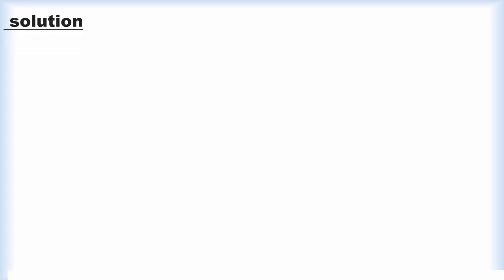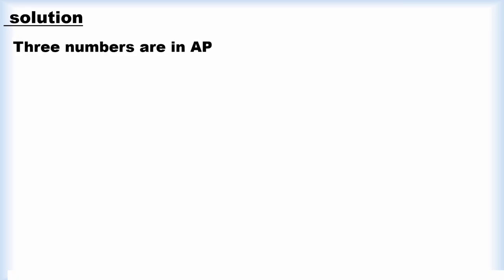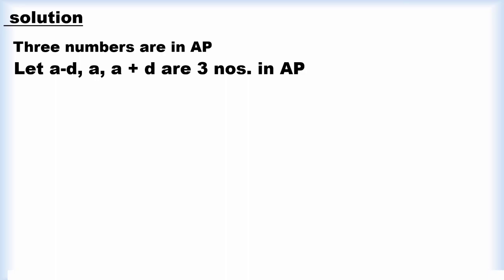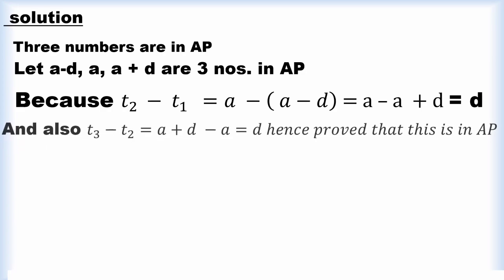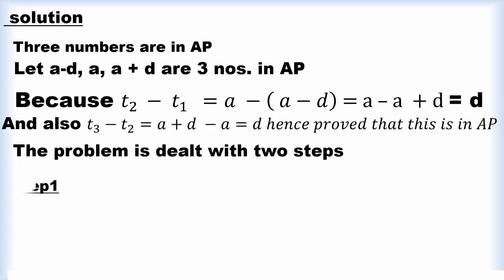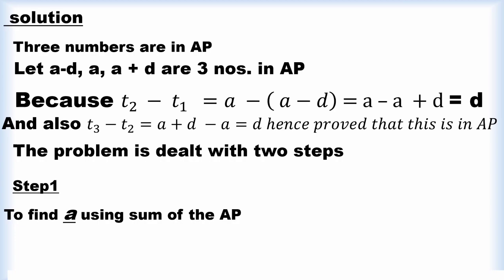Next is the solution. Three numbers are in AP, so we take — let us assume that a minus d, a, and a plus d are three numbers in AP. Here the second term is a, the first term is a minus d. That is, t2 minus t1 equals a minus (a minus d) equals d. And also t3 minus t2 is also equal to d. That is why this is an AP.